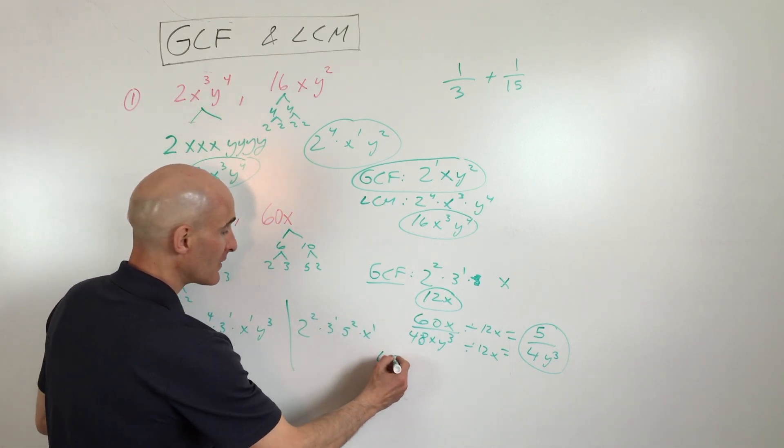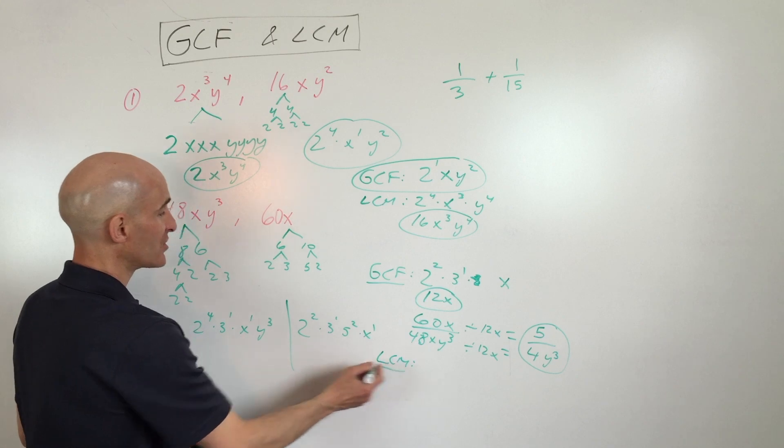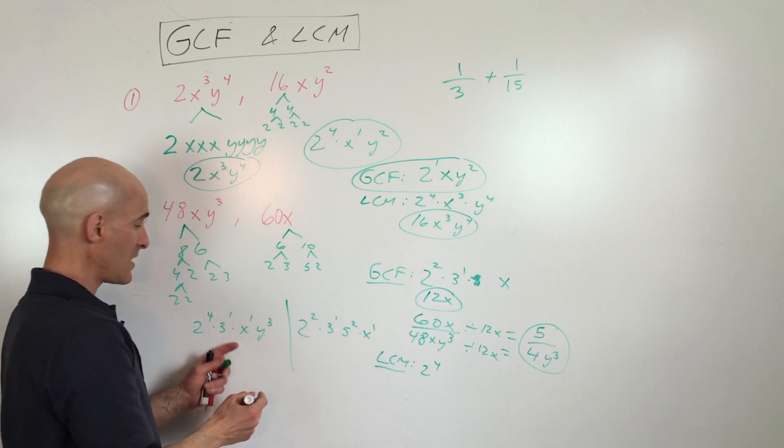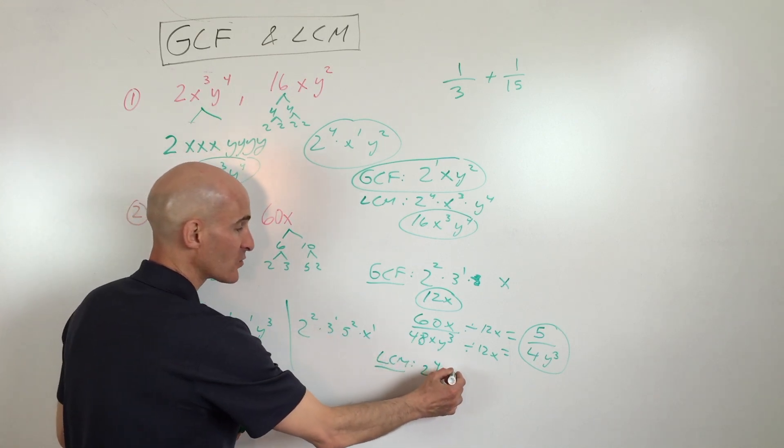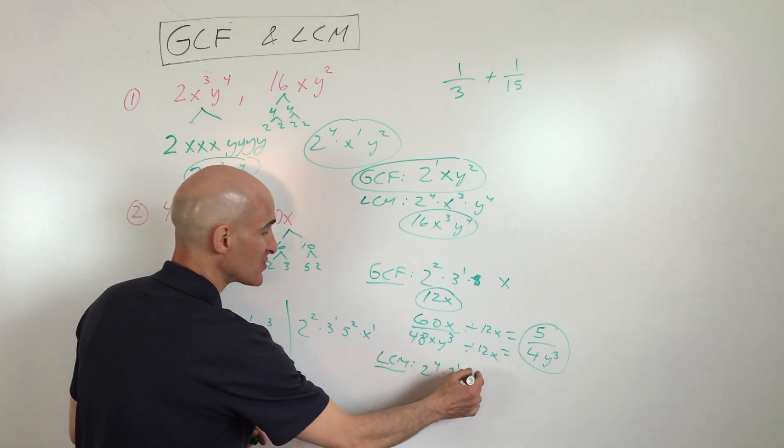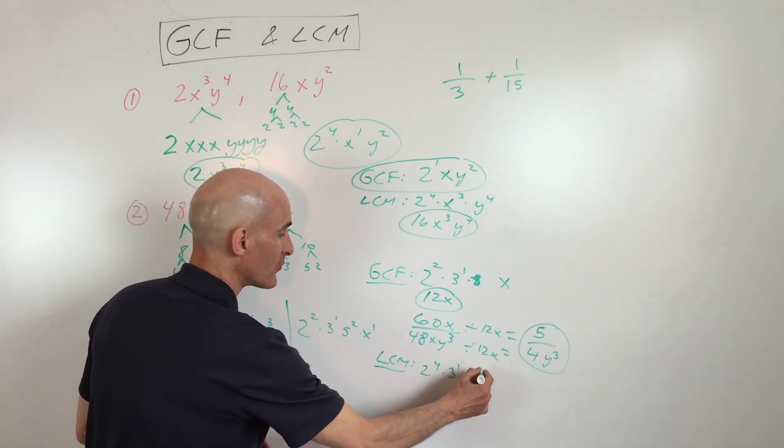Least common multiple. Least common multiple, we're actually going to take whatever occurs more. So here we have 4 twos, 2 twos. We're going to need 4 twos. 1 three, 1 three, it's a tie. So we're still going to use 1 three. 2 fives, no fives, we're going to use 2 fives. I usually go from lowest to highest.